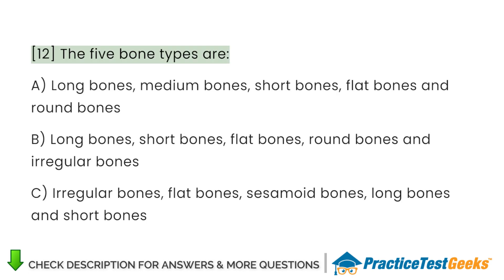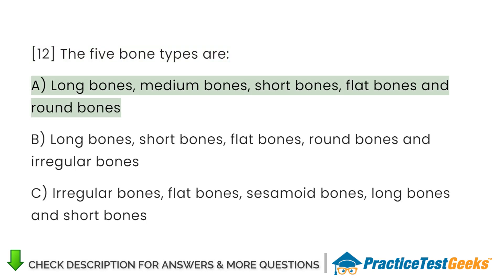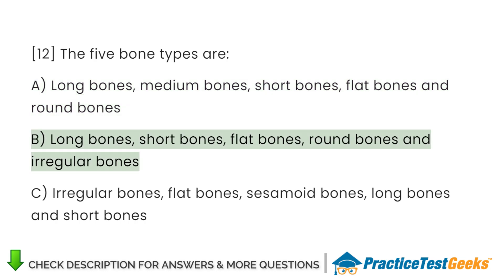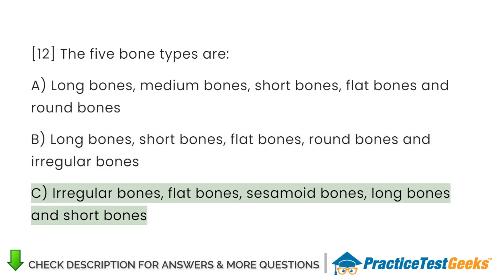The five bone types are: A. Long bones, medium bones, short bones, flat bones, and round bones. B. Long bones, short bones, flat bones, round bones, and irregular bones. C. Irregular bones, flat bones, sesamoid bones, long bones, and short bones.